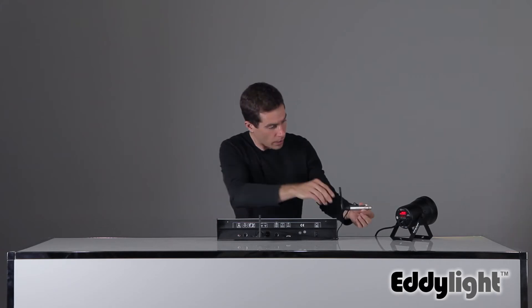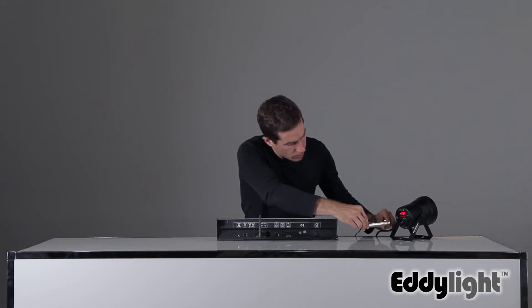The receiver, which you can have as many as you do lights, plugs right into the back of the light under DMX in.